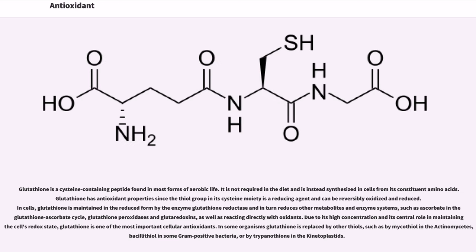Glutathione is a cysteine-containing peptide found in most forms of aerobic life. It is not required in the diet and is instead synthesized in cells from its constituent amino acids. Glutathione has antioxidant properties since the thiol group in its cysteine moiety is a reducing agent and can be reversibly oxidized and reduced. In cells, glutathione is maintained in the reduced form by the enzyme glutathione reductase and in turn reduces other metabolites and enzyme systems, such as ascorbate in the glutathione-ascorbate cycle, glutathione peroxidases and glutaredoxins, as well as reacting directly with oxidants. Due to its high concentration and its central role in maintaining the cell's redox state, glutathione is one of the most important cellular antioxidants.